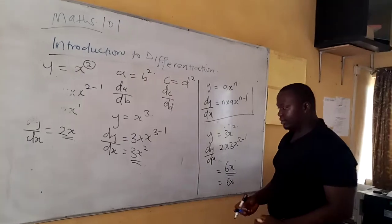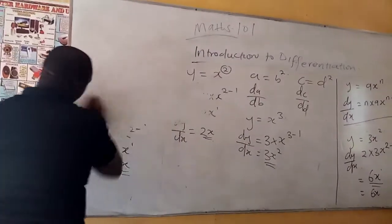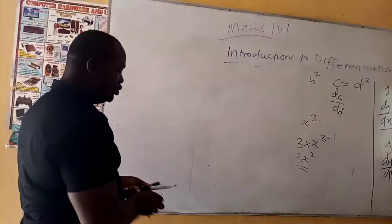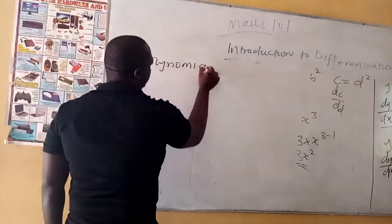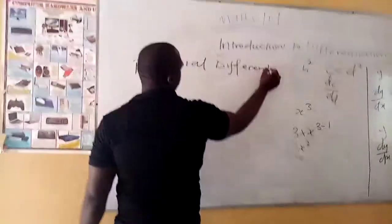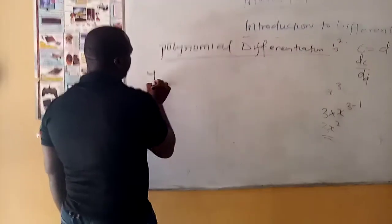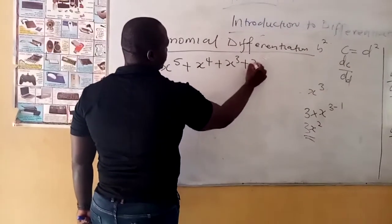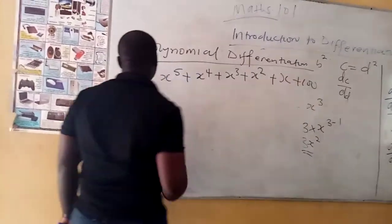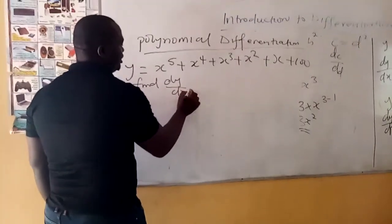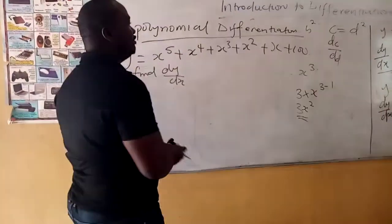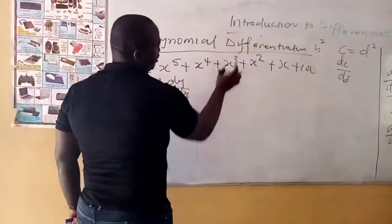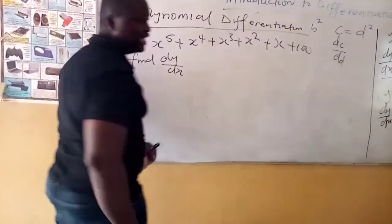Now I want to run a polynomial differentiation and we will call it a day on this video. In polynomial differentiation, it is very easy. You have something like y equals x to the power 5 plus x to the power 4 plus x to the power 3 plus x squared plus x plus 100, and the question says find dy over dx. What we do is still the same way — we differentiate each term separately.